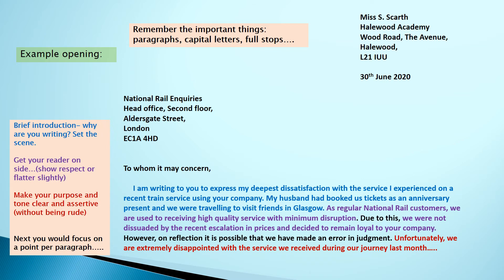Highlighted in blue, purple and red, you have different sections of this opening. The blue section is a brief introduction telling the person reading the letter why we are writing and setting the scene for our situation. The purple part is where we're going to get the reader on side, show a bit of respect and possibly flatter them slightly to make them value what you say and get on board with your argument. For the red part, we're making our purpose and tone clear and assertive without being rude — we don't want to antagonise the person reading it because they're not going to bother with the rest of our argument if we offend them early on.